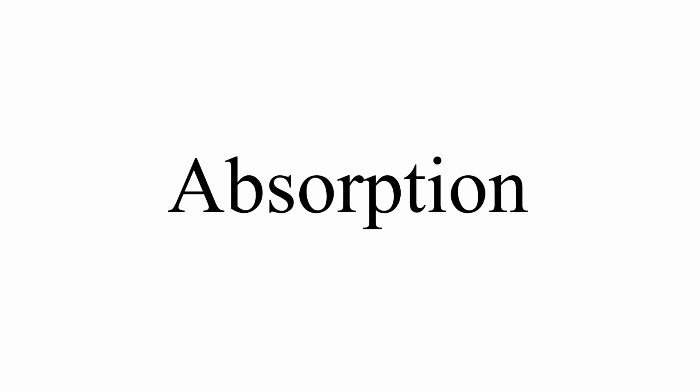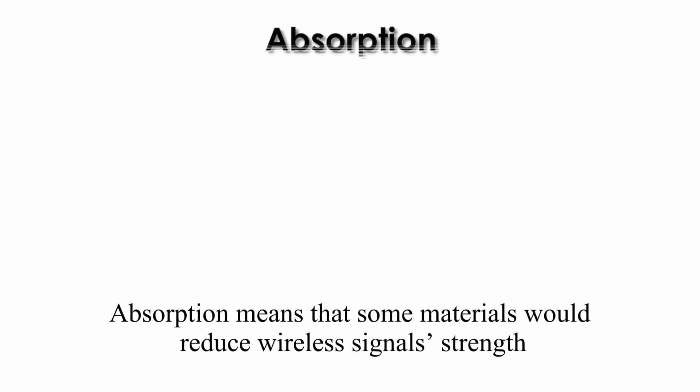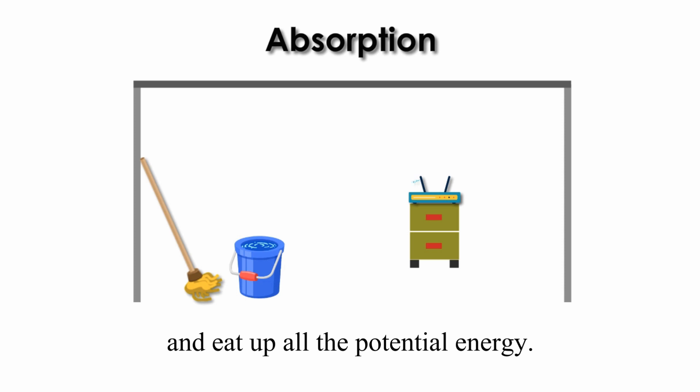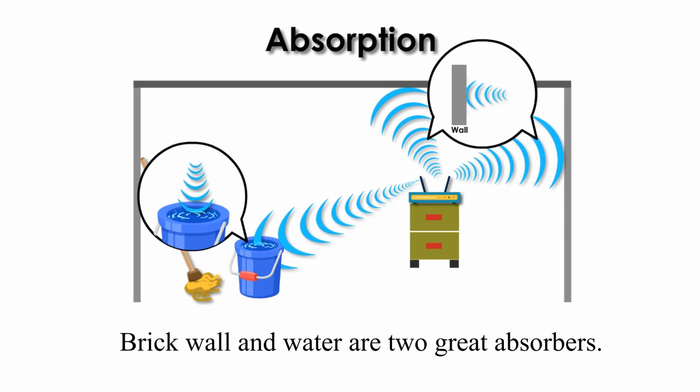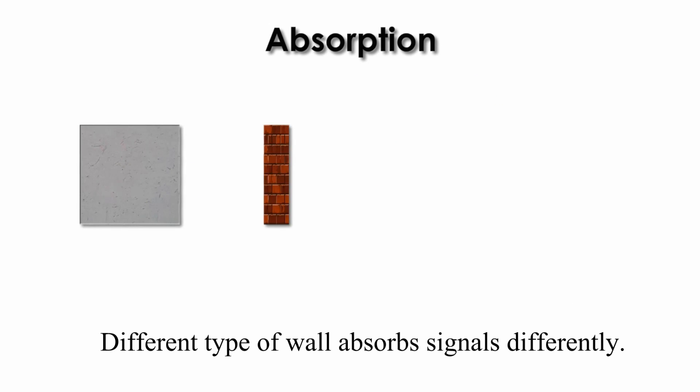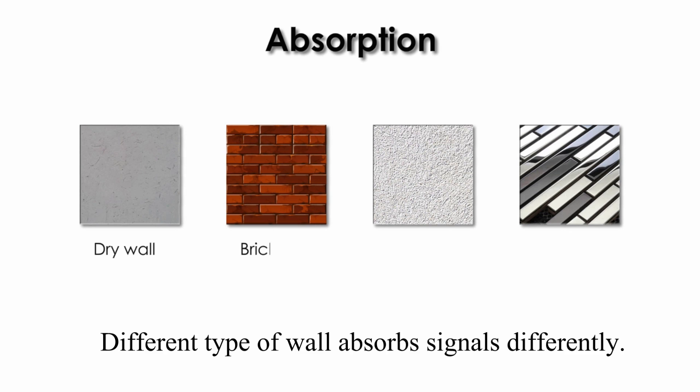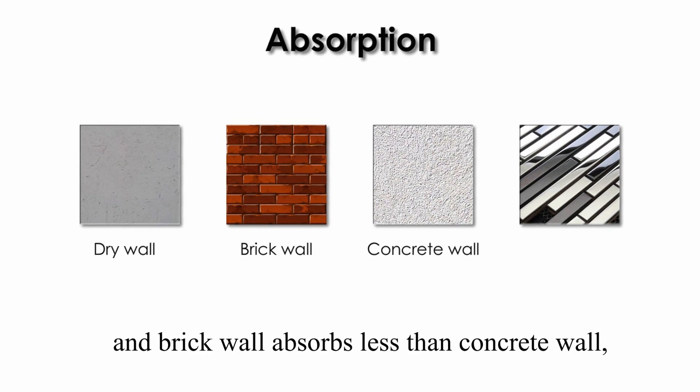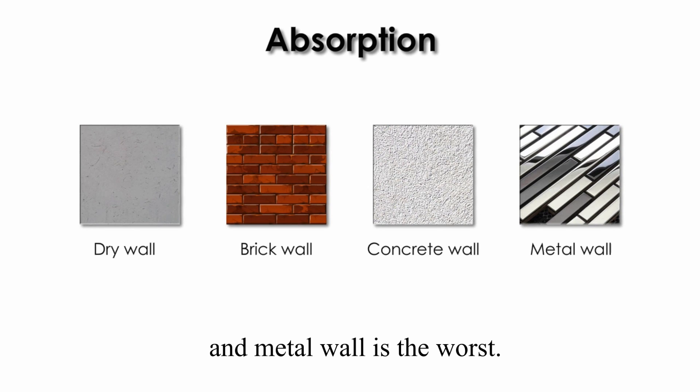Absorption. Absorption means some materials will reduce wireless signal's strength and heat up all the potential energy. Brick wall and water are two great absorbers. Different types of walls absorb signals differently. Dry wall absorbs less than brick wall, and brick wall absorbs less than concrete wall, and metal wall is the worst.